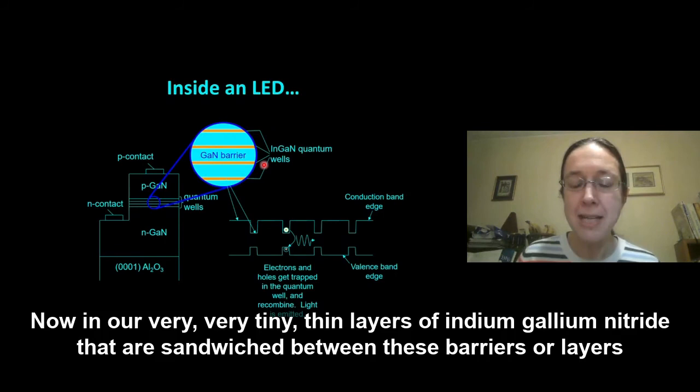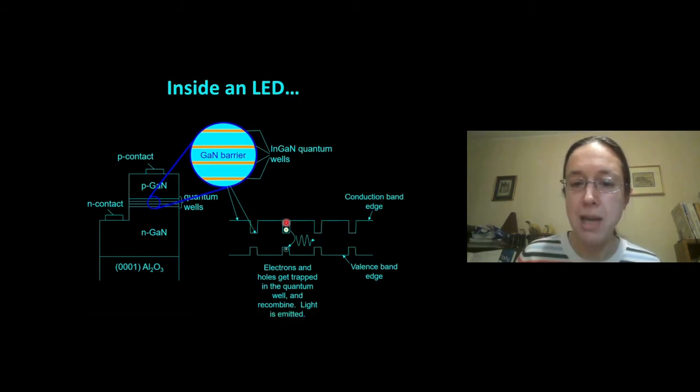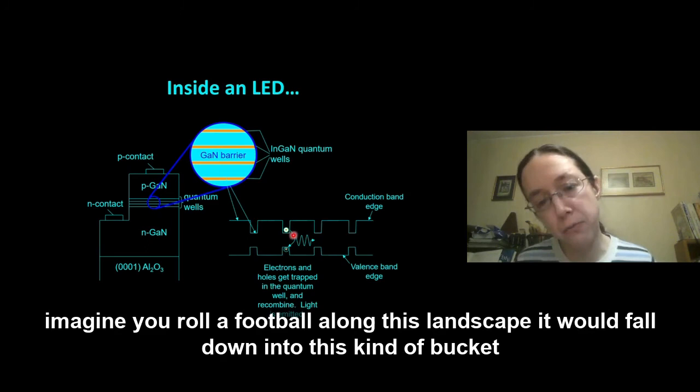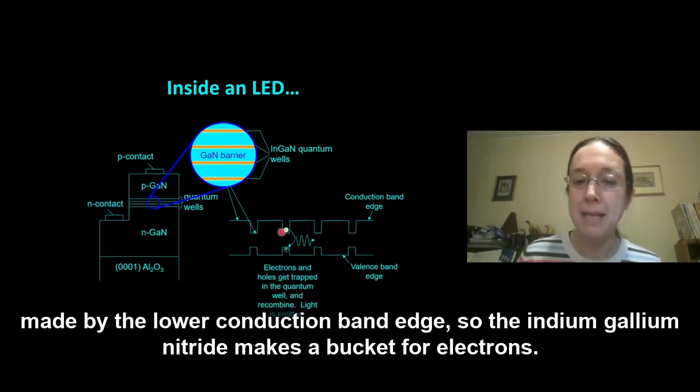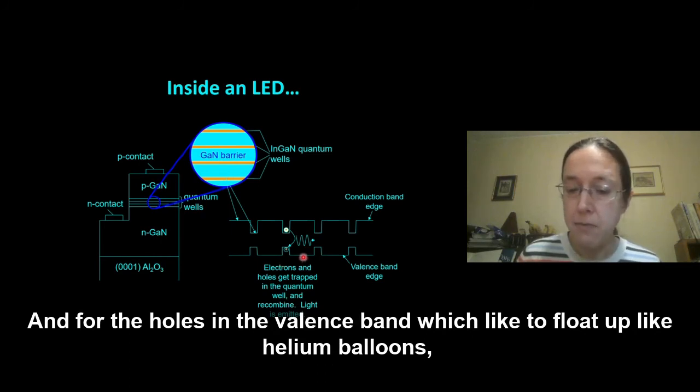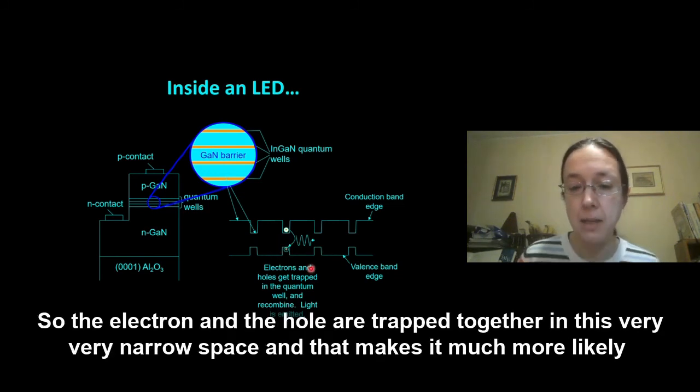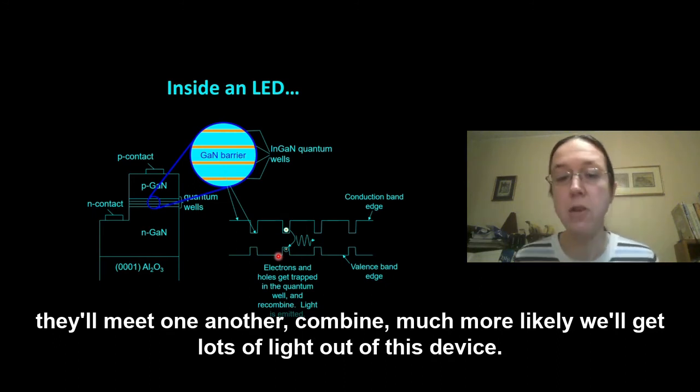Now, in our very, very tiny, thin layers of indium gallium nitride that are sandwiched between these barriers or layers of gallium nitride, that gives us a region of lower band gap. And as I said, the electrons like to fall down. Imagine you rolled a football along this landscape. It would fall down into this kind of bucket made by the lower conduction band edge. So the indium gallium nitride makes a bucket for electrons. And for the holes in the valence band, which like to float up like helium balloons, it's a bit like catching them in a sort of top hat structure just there. So the electron and the hole are trapped together in this very, very narrow space. And that makes it much more likely they'll meet one another combined, much more likely we'll get lots of light out of this device.